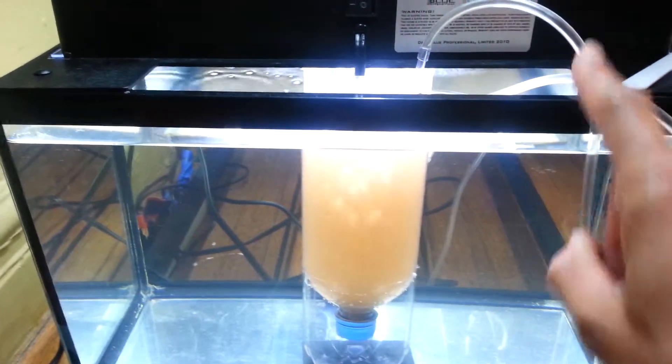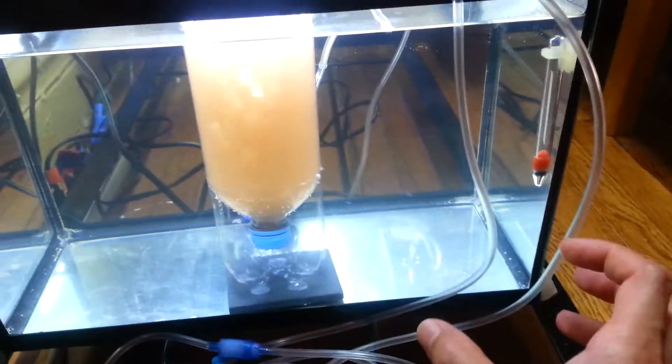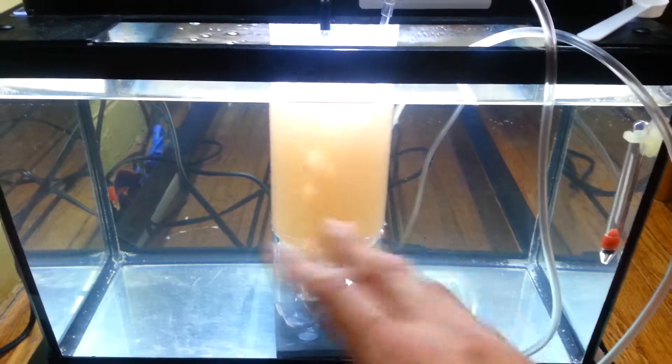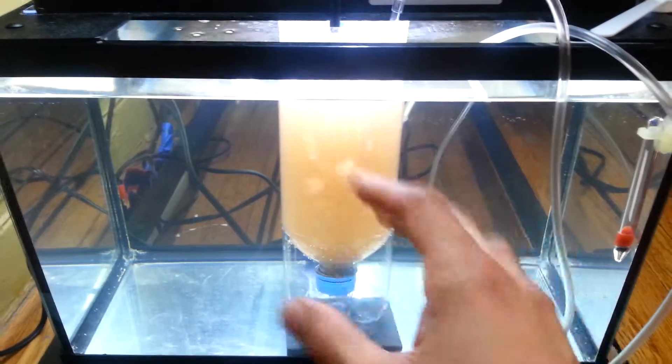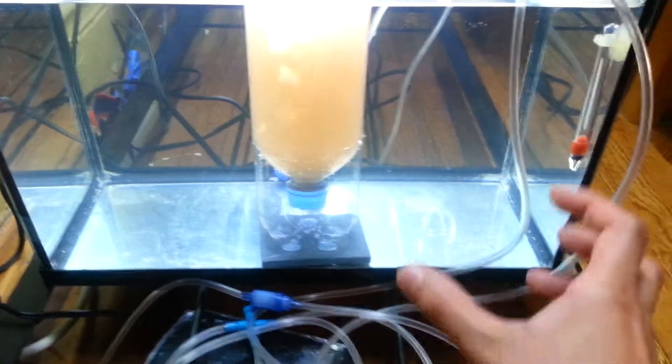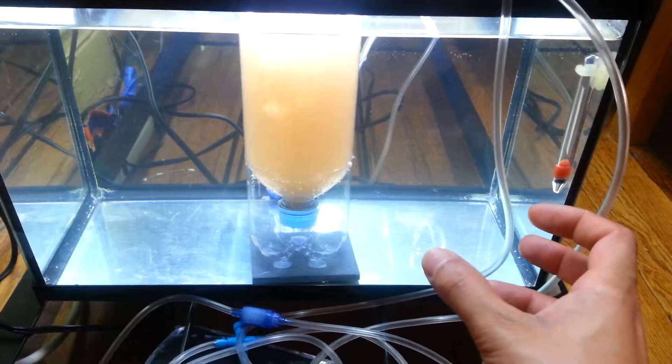Suck out all the brine shrimp. Get your little container to put your brine shrimp in. Get as much as you can with the salt water and everything—you want all that stuff because that's what's going to keep the brine shrimp alive. When you're ready, you take it over to the refrigerator.